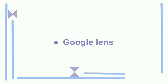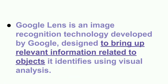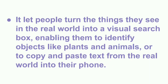Next is Google Lens. Google Lens is an image recognition technology developed by Google, designed to bring up relevant information related to objects. It identifies objects using visual analysis — that is, the camera. We can see real-time objects, barcodes, text, books, and writing. Google Lens will take it as visual input and lets people turn the things they see in the real world into a visual search.